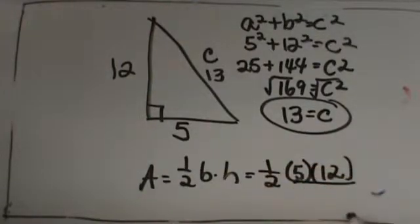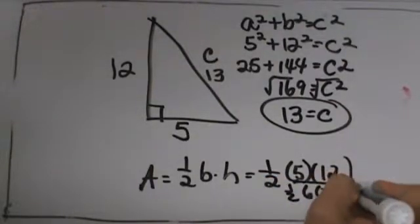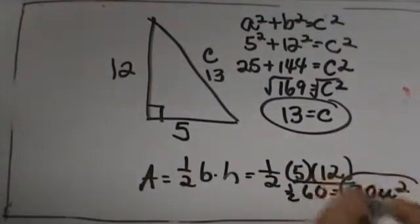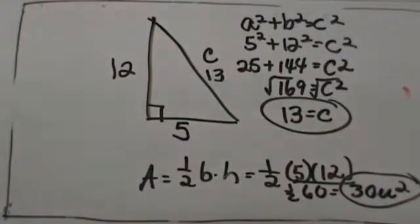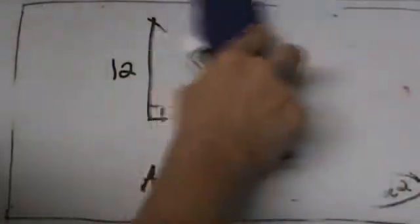So 1 half of 5 times 12. Well, 5 times 12 is 60 and half of 60 is 30. So this would be 30 square units, and that would be the answer for the area. So that one is fairly easy. It is a forward problem. We are solving for C and we are finding the area of the triangle.